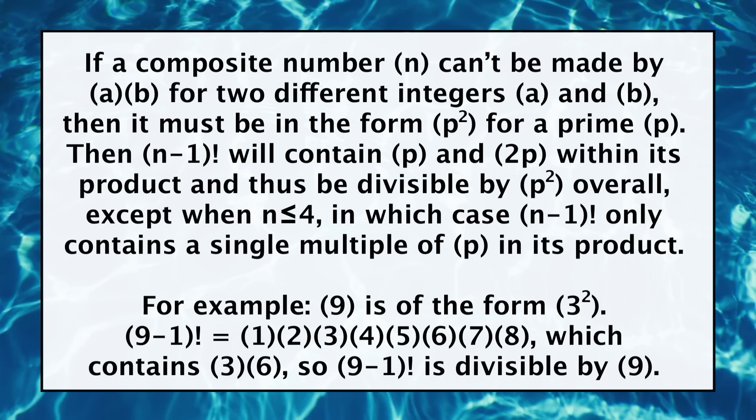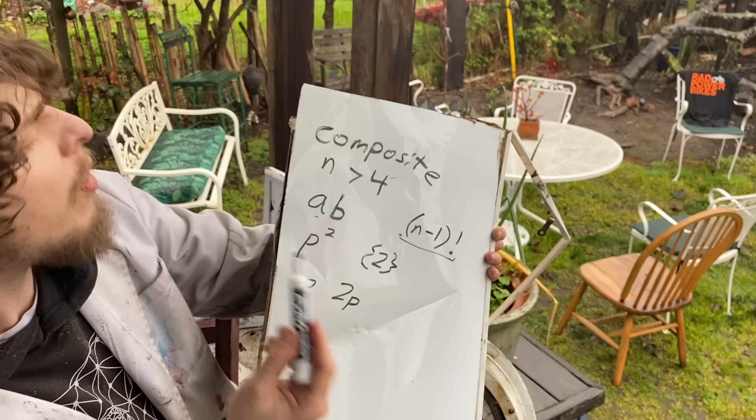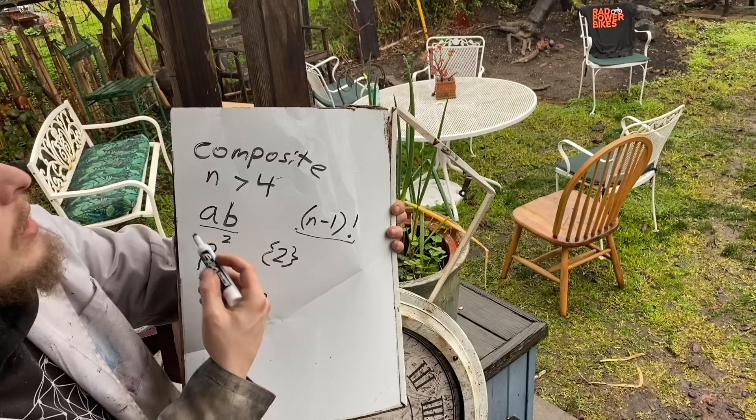Well, this a times b must both be smaller numbers, meaning they are contained in that set of numbers we multiplied in the factorial. And in the case of a p squared, we just need p and 2p to show up in that list of numbers multiplying in the factorial, and that'll give us 2 p's as total factors in the factorial number to be able to divide p squared.